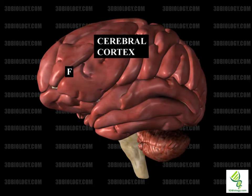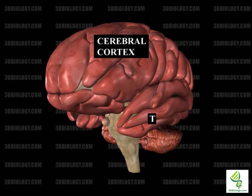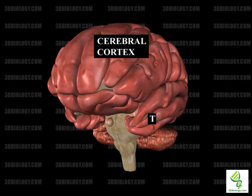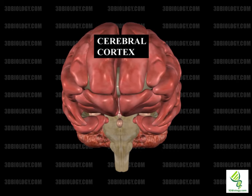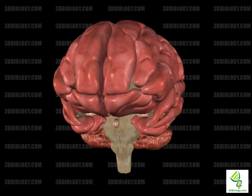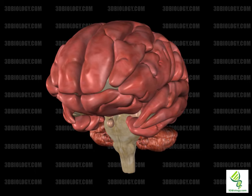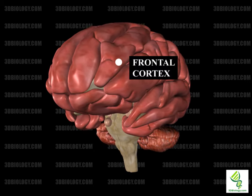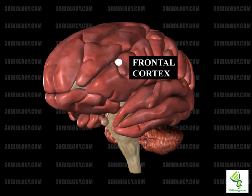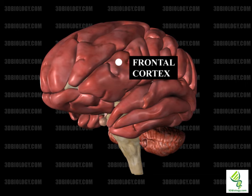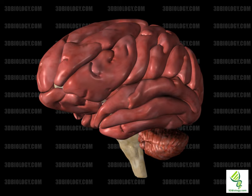The frontal lobe includes Broca's area, responsible for production of language. And the temporal lobe includes Wernicke's area, responsible for speech comprehension. The frontal cortex can be found in the anterior of each cerebral hemisphere. It is separated from the parietal lobe by the central sulcus and from the temporal lobe by the lateral sulcus.